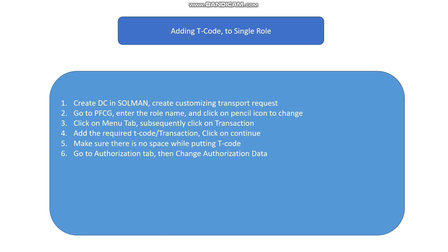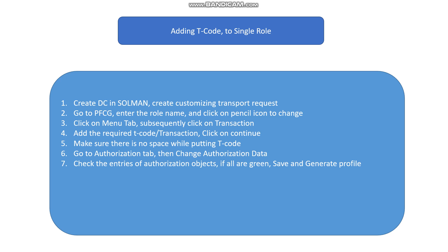Subsequently, go to the authorization tab and click on change authorization data. Check the entries of the authorization object — if all are green, save and generate the profile. If any authorization object fields are yellow, maintain the field values as per project requirements to make them green, then save and generate the profile.